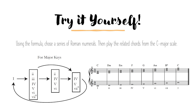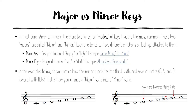In most Euro-American music there are two kinds or modes of keys that are used most commonly, and each one tends to have different emotions or feelings attached to them. The major key is designed to sound happy or light — one example is Jason Mraz's 'I'm Yours.' A minor key is designed to sound sad or dark, like Alicia Keys' 'Piano and I,' a much more emotional or sad sounding type of song.